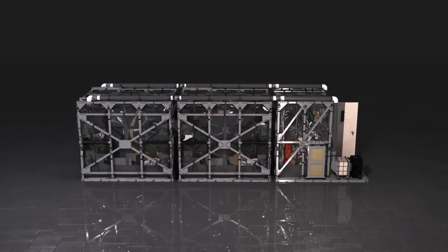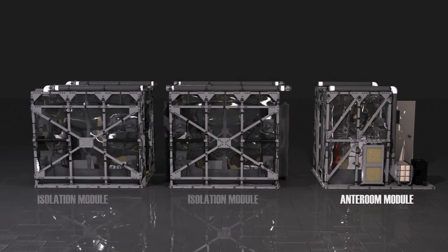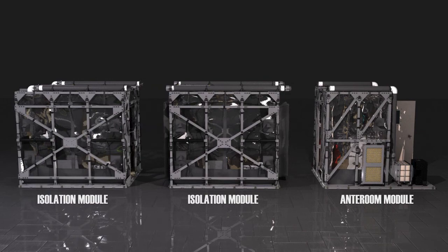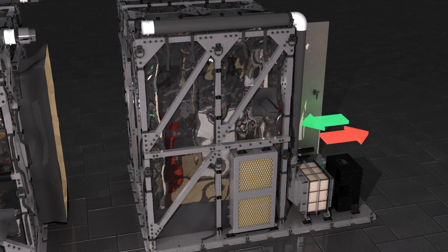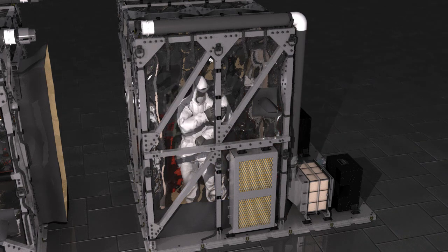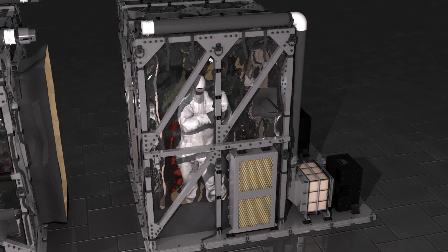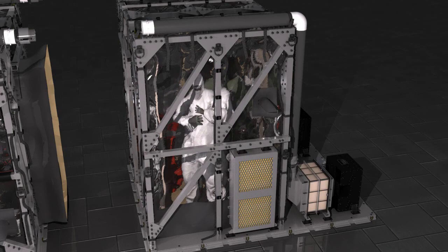The TIS is divided into three modules: the anteroom module and the two isolation modules. The anteroom module is a compartment that provides the medical team an entry and exit, a place to discard their personal protective equipment, or PPE, and a place to perform self-decontamination procedures.